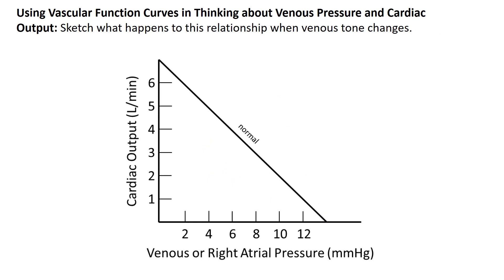Here's another exercise: sketch what happens to this relationship when venous tone changes — that is, when smooth muscle in the large veins contracts, making the veins stiffer and squeezing against the blood. If you increase venous tone, smooth muscle squeezes the veins, making them less compliant and more stiff, so venous pressure increases and the curve shifts upward. Decreasing venous tone causes the opposite.